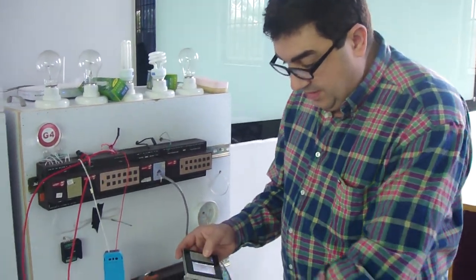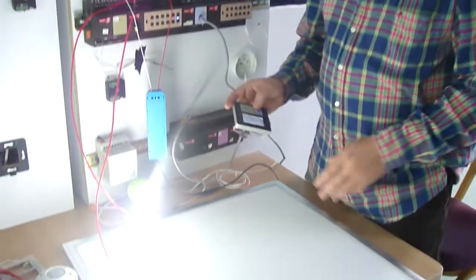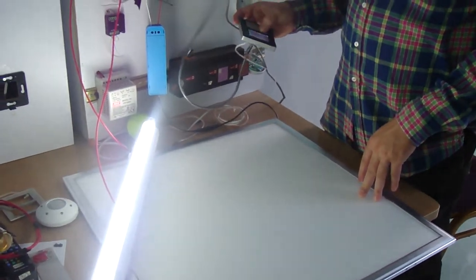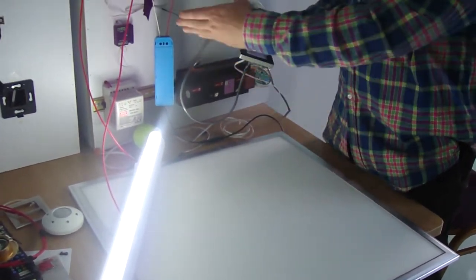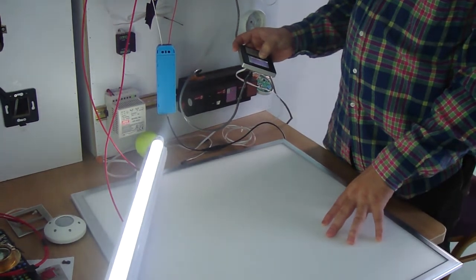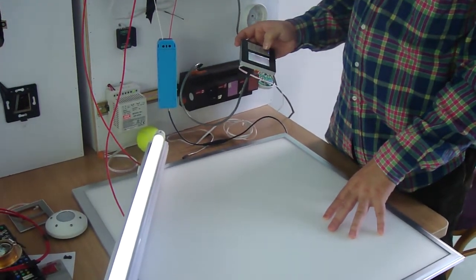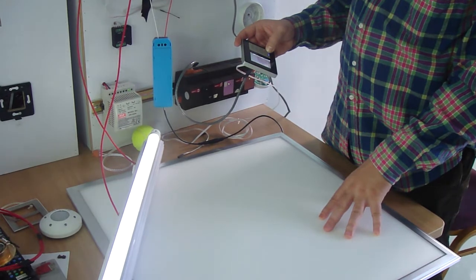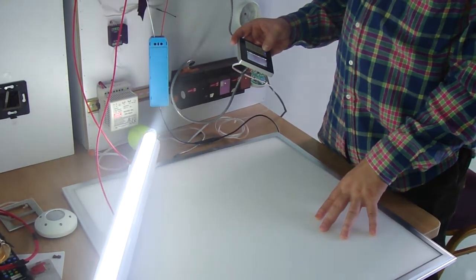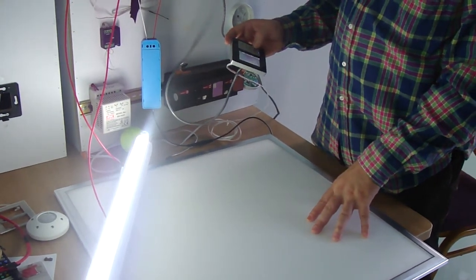We will see now the tube light. This is the tube light. I'm going to dim it, and you can see the reflection there. Here, I'm going to ramp it as an example.